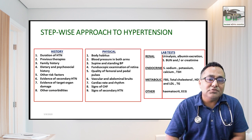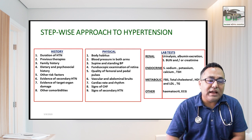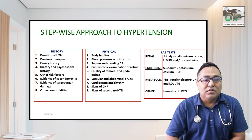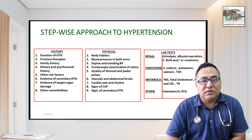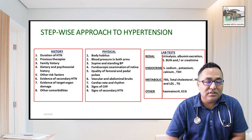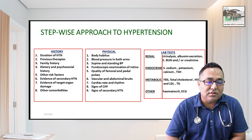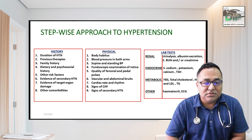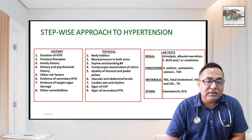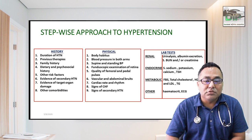In the history, ask how long the patient has had hypertension, what drugs they were taking, whether it is familial to differentiate primary from secondary, and about dietary habits such as high salt or high fat diet, and psychological history. On physical examination, check BMI, measure BP in both arms, perform fundus examination, and examine for signs of target organ damage from hypertension.